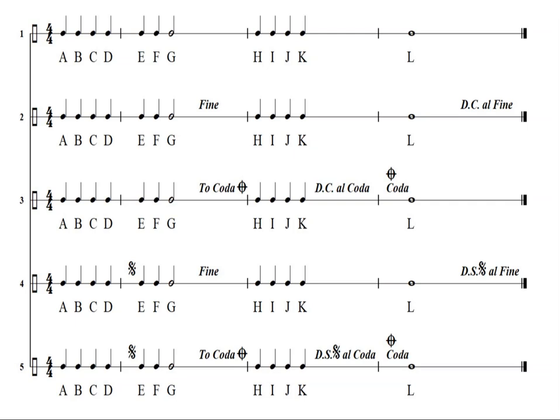So line two — think about it based on the training we've had. Line two: A, B, C, D, E, F, G, H, I, J, K, L — A, B, C, D, E, F, G.